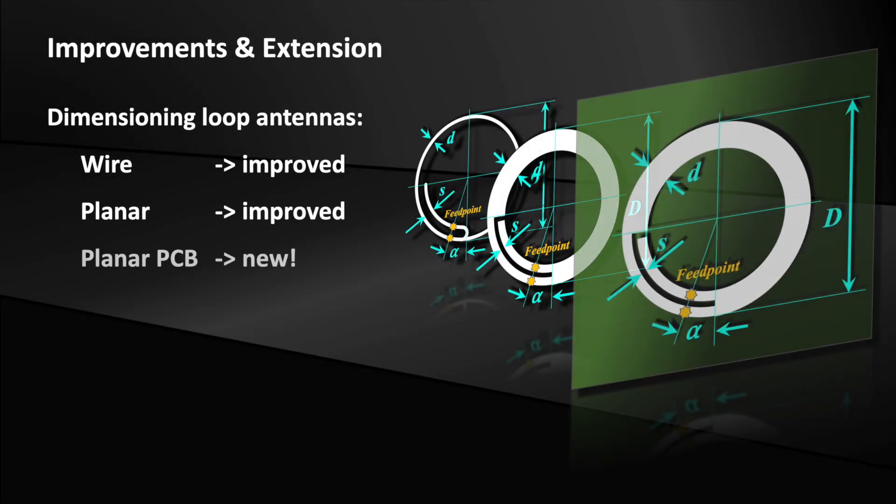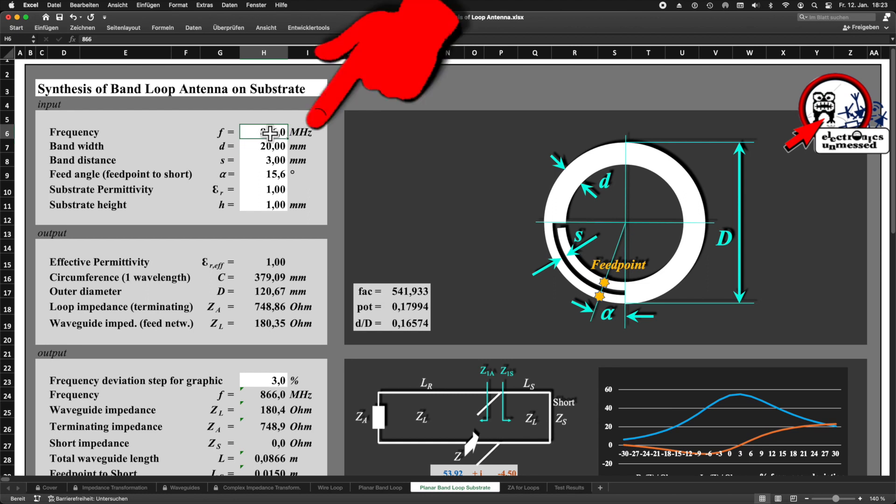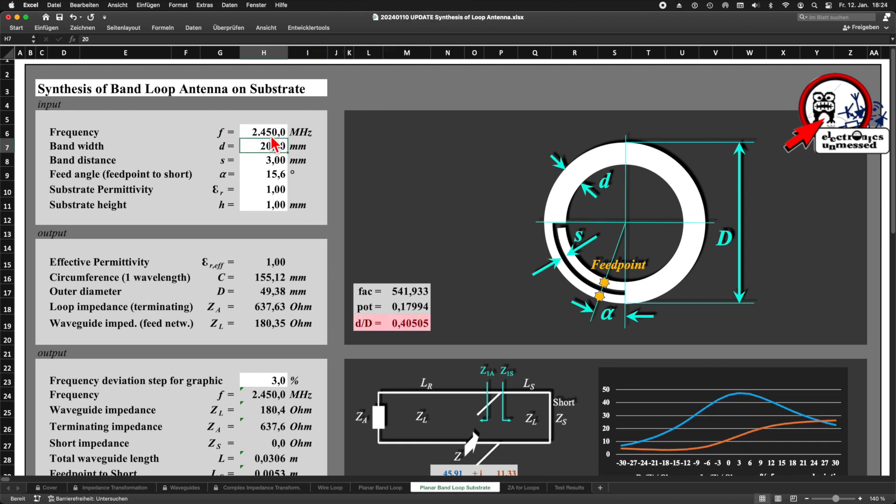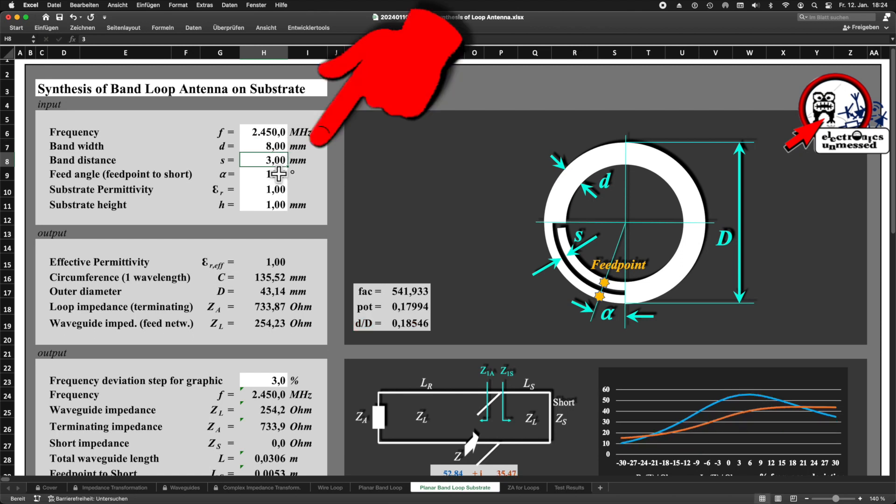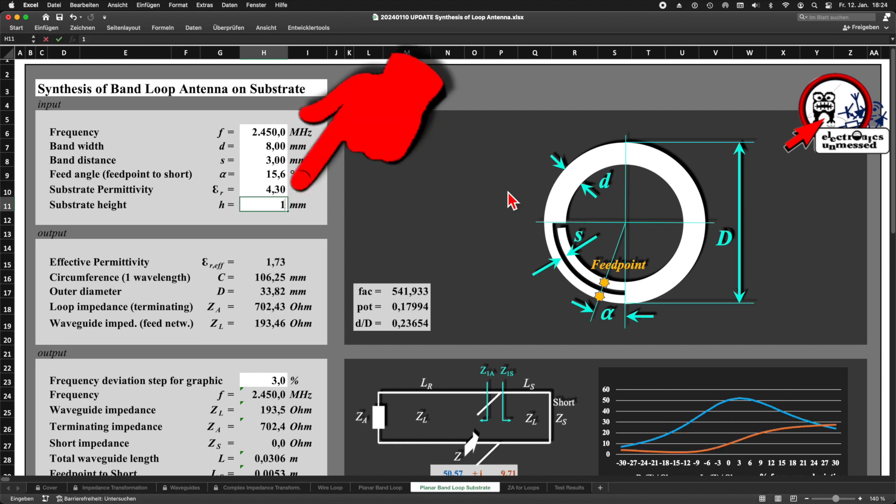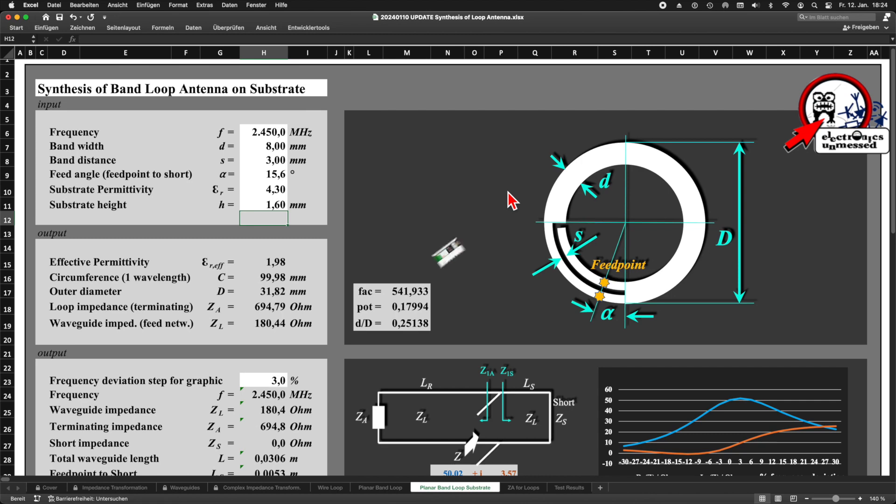We can now actually dimension the PCB antenna. And now we are testing this for a Wi-Fi frequency. I will briefly show again how the synthesis of the antenna works. We take 2450 MHz. Then I select a conductor width of 8 mm. I use 4.3 as the permittivity of the material, which is a usual value for good material. PCB material can have a permittivity between 3.5 and 5.5, depending on the quality and purpose. For higher frequencies, quality material with lower dielectric constant is usually used.